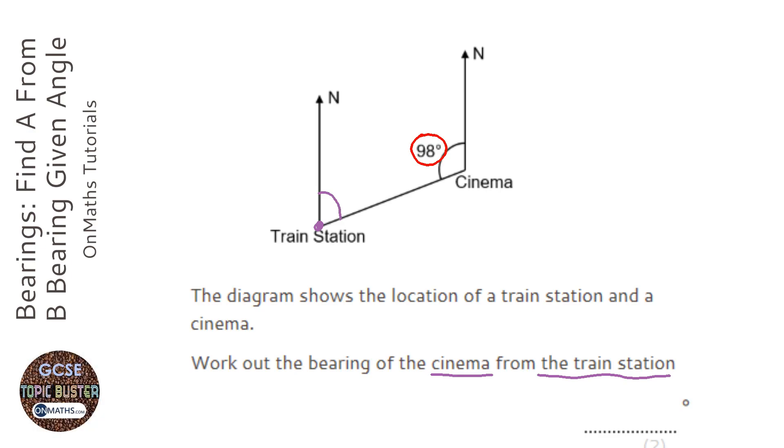So, we first of all realize that all north lines are parallel. So we use the fact that we have parallel lines, and if that's 98 at the top right there, this is going to be 98 here. And the reason for that is that they are alternate angles.